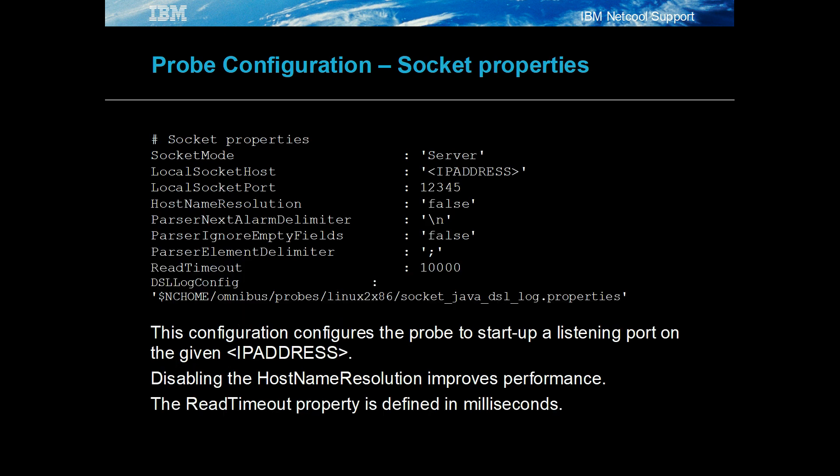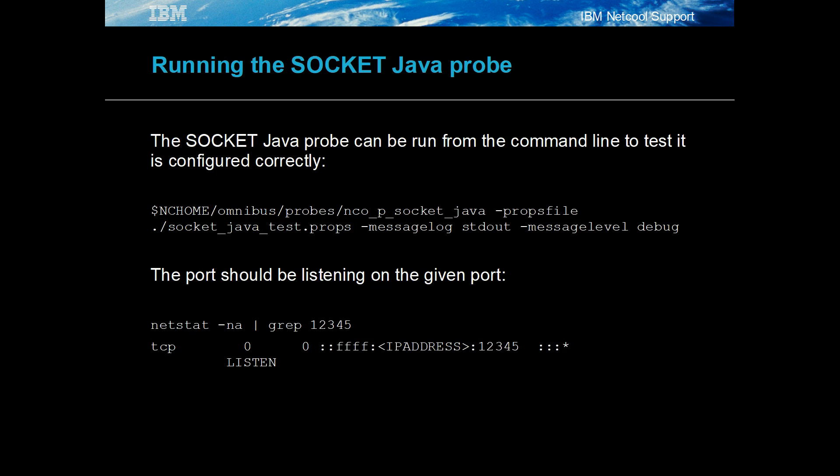The use of buffering can improve event processing when probes are under significant load. For the Socket Java Gateway events, the following settings were used. The probe will listen on the given host port. The Event Read Timeout property should always be set. Disabling naming resolution improves the probe's overall performance. Running the probe from the command line when testing allows for any issues to be easily spotted. When running, the probe should be listening for connections on the given port.